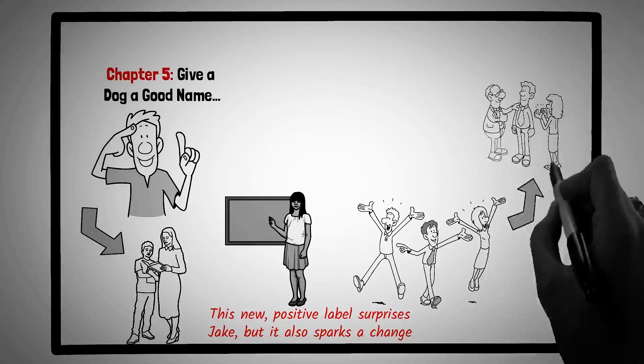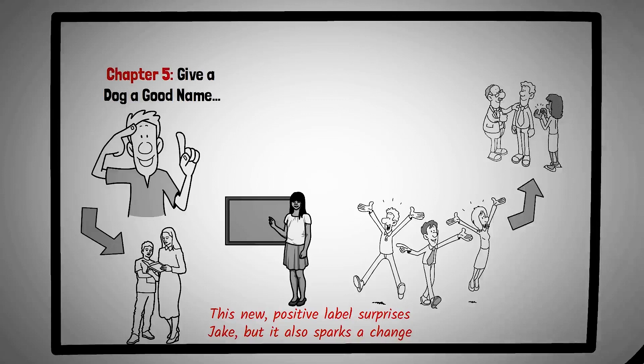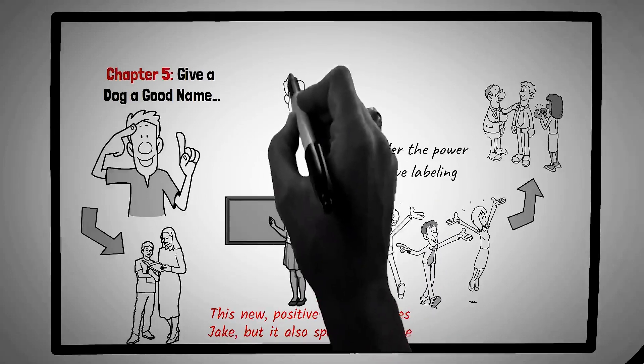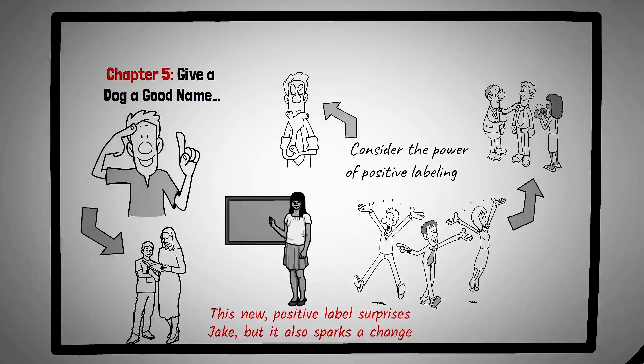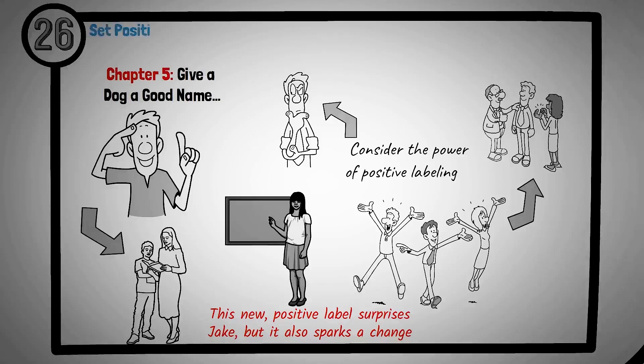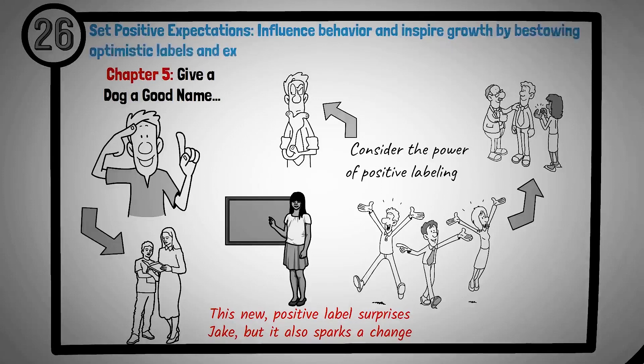When interacting with others, especially those who might be struggling with self-worth or negative perceptions, consider the power of positive labeling. By setting optimistic expectations and bestowing positive labels, you can inspire change and empower individuals to see the best in themselves. Our beliefs and expectations about others can shape their behaviors and self-perception. By bestowing positive labels and setting optimistic expectations, we can inspire individuals to rise to the occasion and embody their best selves. Principle number twenty-six is set positive expectations. Influence behavior and inspire growth by bestowing optimistic labels and expectations.